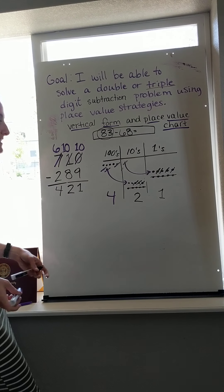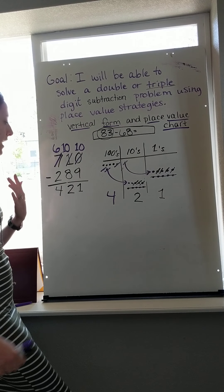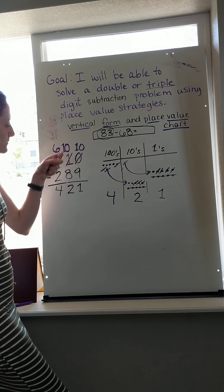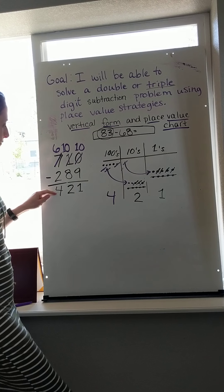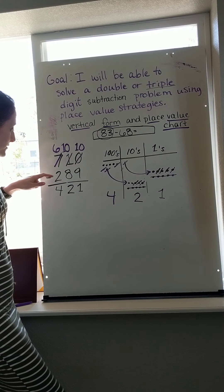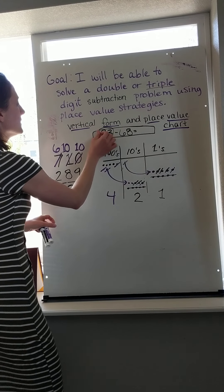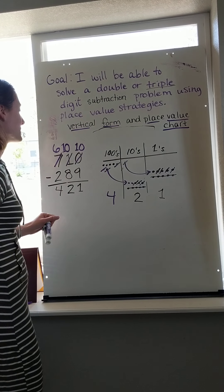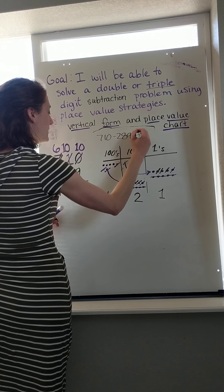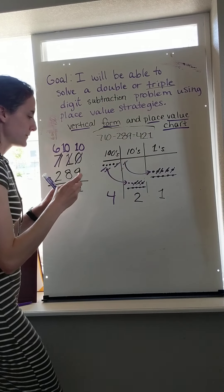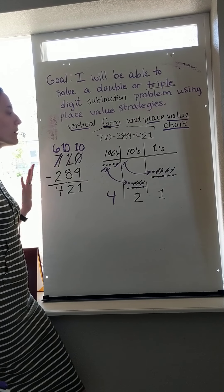And I can even make sure by adding back to check. 9 plus 1 makes 10 ones. 8 tens plus 2 tens makes 10 tens. Yes, 4 plus 2 does make 6, so 400 plus 200 is 600. That's how I'm positive that I got the right answer. We were solving 710 minus 289, and we found that it made 421.